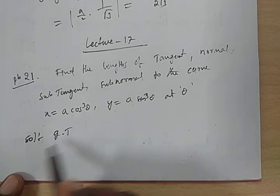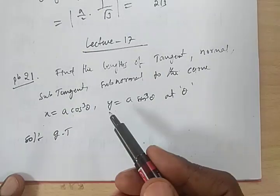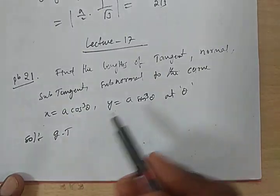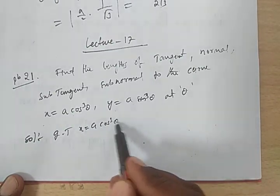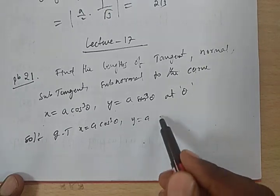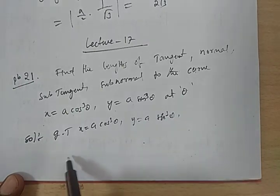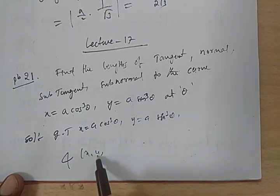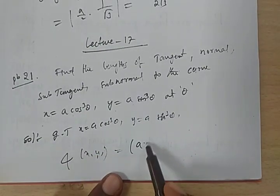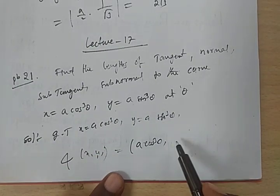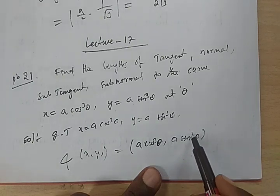Solution. Given these two parametric equations, the curve is given in parametric form. Given that x equals a cos³θ and y equals a sin³θ. The point (x₁, y₁) — if you substitute θ, we get the point as (a cos³θ, a sin³θ).